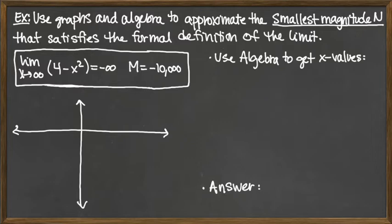The M value is large in magnitude here. It happens to be negative since we're approaching negative infinity for the limit, but large in magnitude y value is negative 10,000.